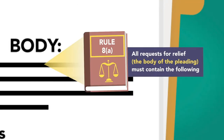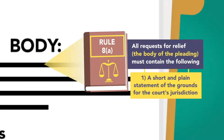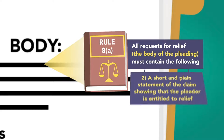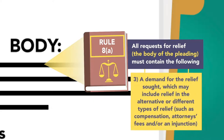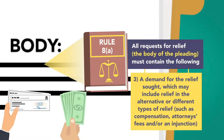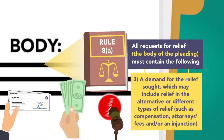Under Rule 8a, all requests for relief must contain the following: 1. A short and plain statement of the grounds for the court's jurisdiction. 2. A short and plain statement of the claim, showing that the pleader is entitled to relief. And 3. A demand for the relief sought, which may include relief in the alternative or different types of relief, such as compensation, attorney's fees, and/or an injunction.